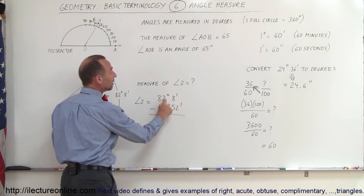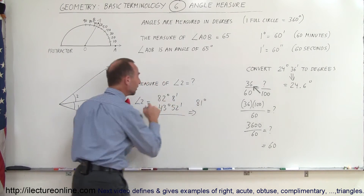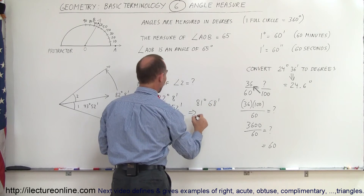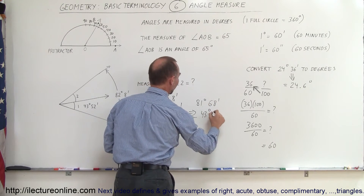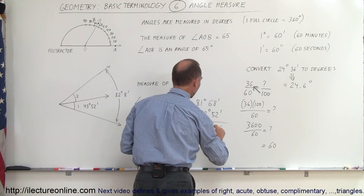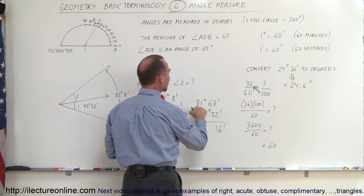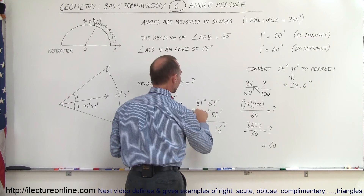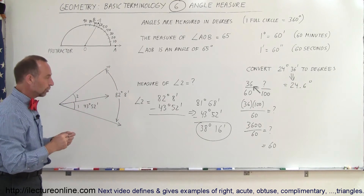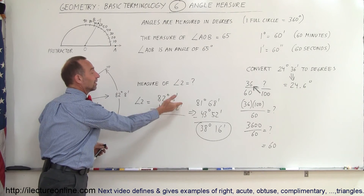What we do is borrow 1 degree and convert it to minutes. So we rewrite 82 degrees 8 minutes as 81 degrees and 68 minutes — since 1 degree equals 60 minutes, 60 plus 8 gives 68 minutes — minus 43 degrees and 52 minutes. Now we can subtract: 68 minus 52 minutes gives 16 minutes. Then 81 minus 43 degrees: 11 minus 3 is 8, and 7 minus 4 is 3, giving 38 degrees. So the measure of angle 2 is 38 degrees and 16 minutes.